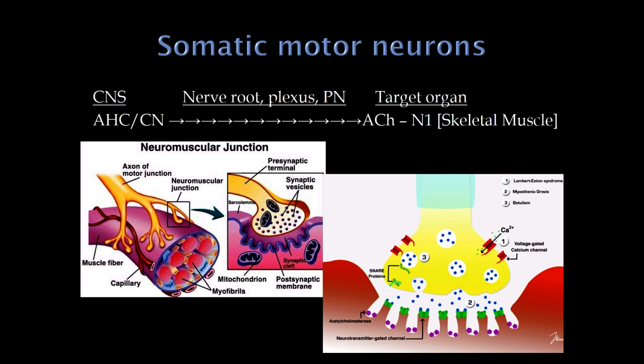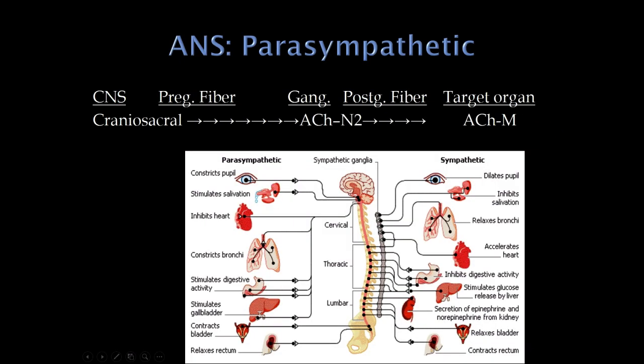In the spinal cord there are anterior horn cells, which are the nerves that initiate an action potential to move your arms and legs. The key contrast is that in the somatic system acetylcholine is released stimulating nicotinic receptors, and we covered three main neurologic conditions that can affect the neuromuscular junction.